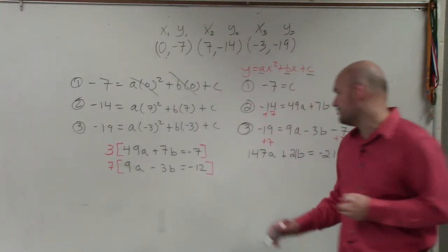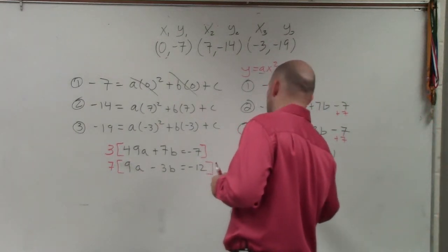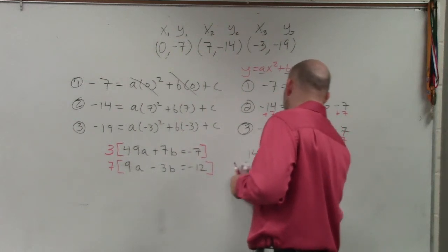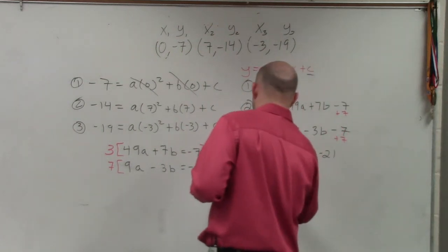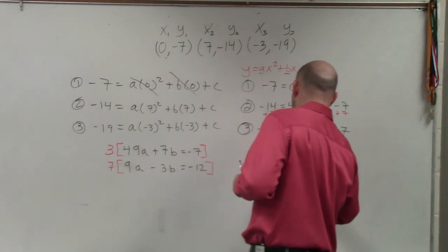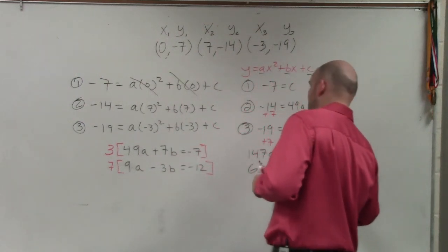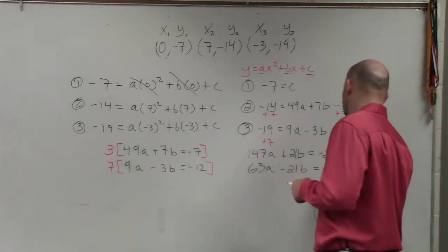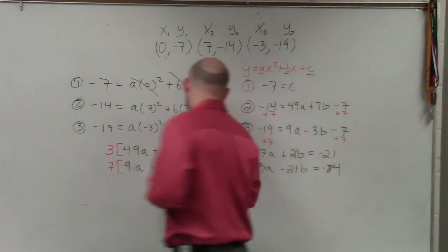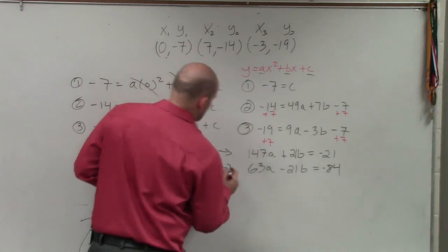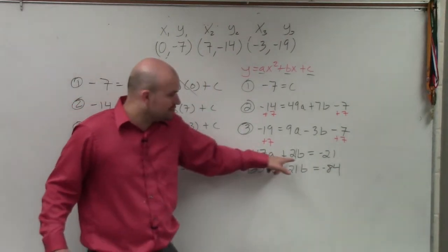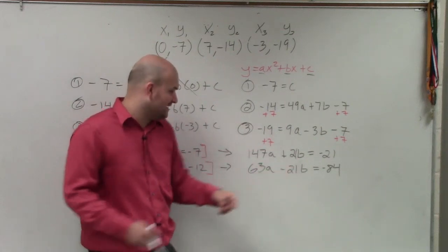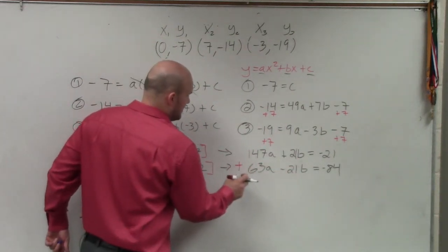So I have 147a plus 21b equals negative 21. All over 7 times 8, 63, right? 63a plus negative 3. Oops, negative. Oh, I'm sorry, that's multiplied by 7, right? 63a minus 21b equals negative 84. Now that I have two, now I have the variables have the same number, one positive, one negative, I can just add the two equations.